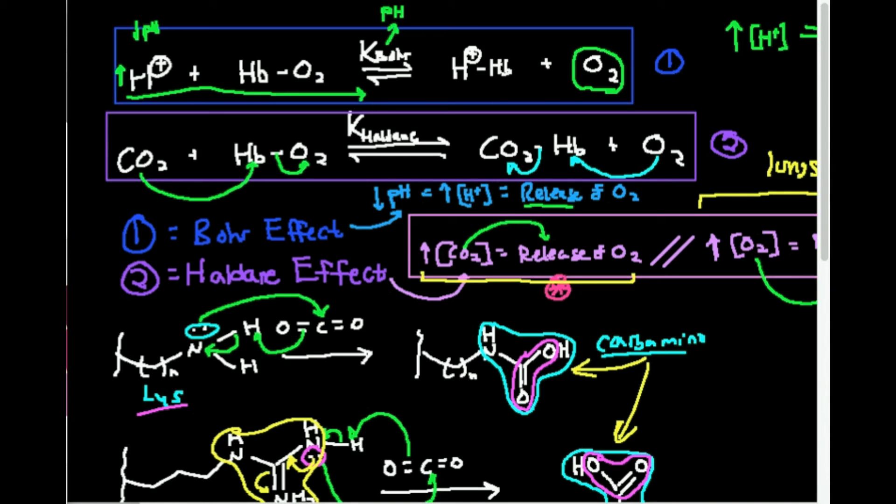And so this is ultimately how it works. So I hope this video made sense. Make sure to like this video and subscribe to the channel for future videos. Ultimately, in the next video, we're going to go over 2,3-BPG, or 2,3-bisphosphoglycerate, which allosterically regulates hemoglobin, and I hope you join us for that. Thank you very much for watching this video.